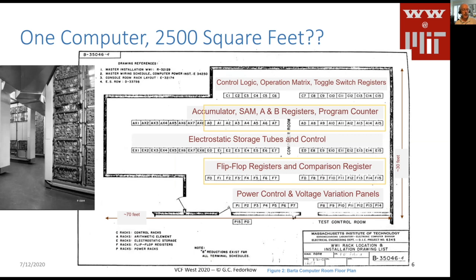The machine was large in terms of square feet and power — about 100 kilowatts. The computer room itself was 2,500 square feet, with more stuff on the floor below for drum storage and more in the basement for power supplies. The machine actually maps to its block diagram pretty clearly on the floor plan. You can see 16 racks labeled A0 through A15 — those are the accumulator, the ALU, basically accumulator A and B registers, the program counter. Racks E0 through E15 are memory, starting with electrostatic storage tube memory. Another row of 16 racks contains other flip-flop storage, comparison registers, and a few other odds and ends.